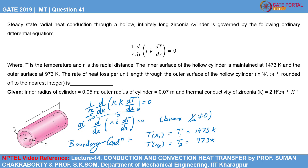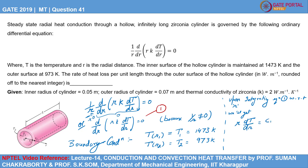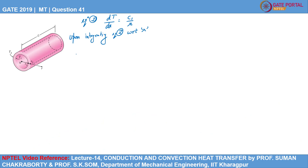To solve the ODE, we need to integrate it twice since it involves a double derivative. Upon integrating equation 1 with respect to r, we get r·dT/dr = C1, where C1 is an integration constant, or equivalently dT/dr = C1/r. Integrating this equation 2 again with respect to r, we get T = C1·ln(r) + C2, where C1 and C2 are integration constants whose values we find by applying the boundary conditions.